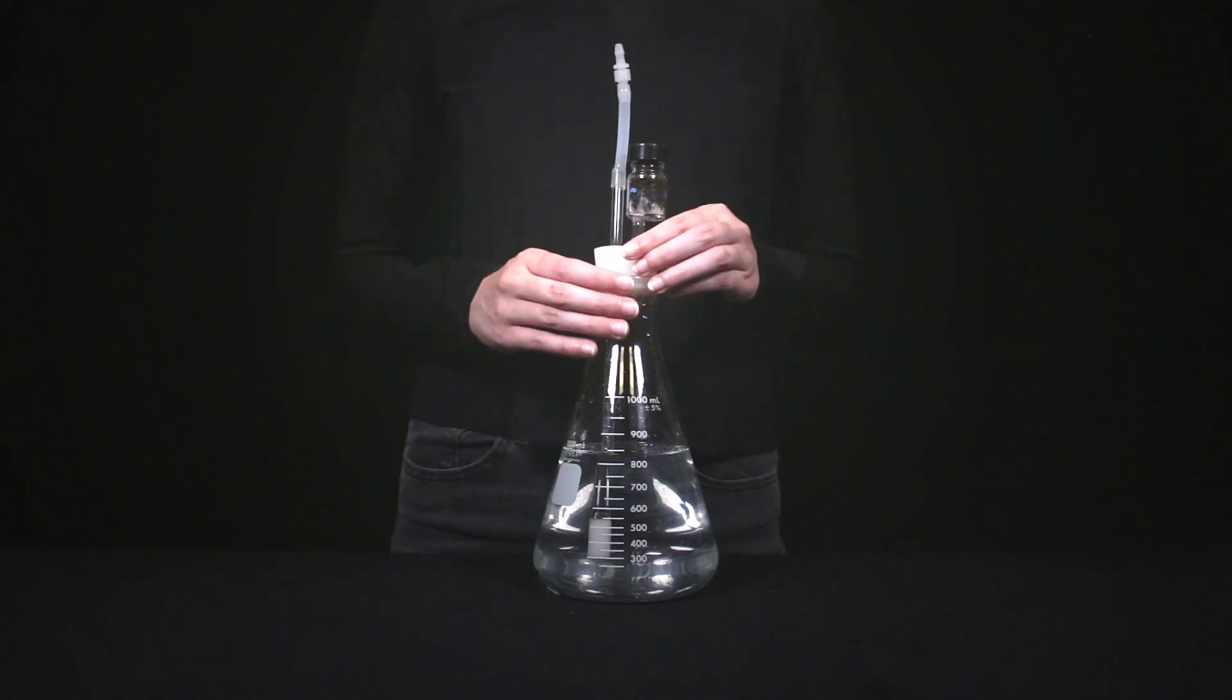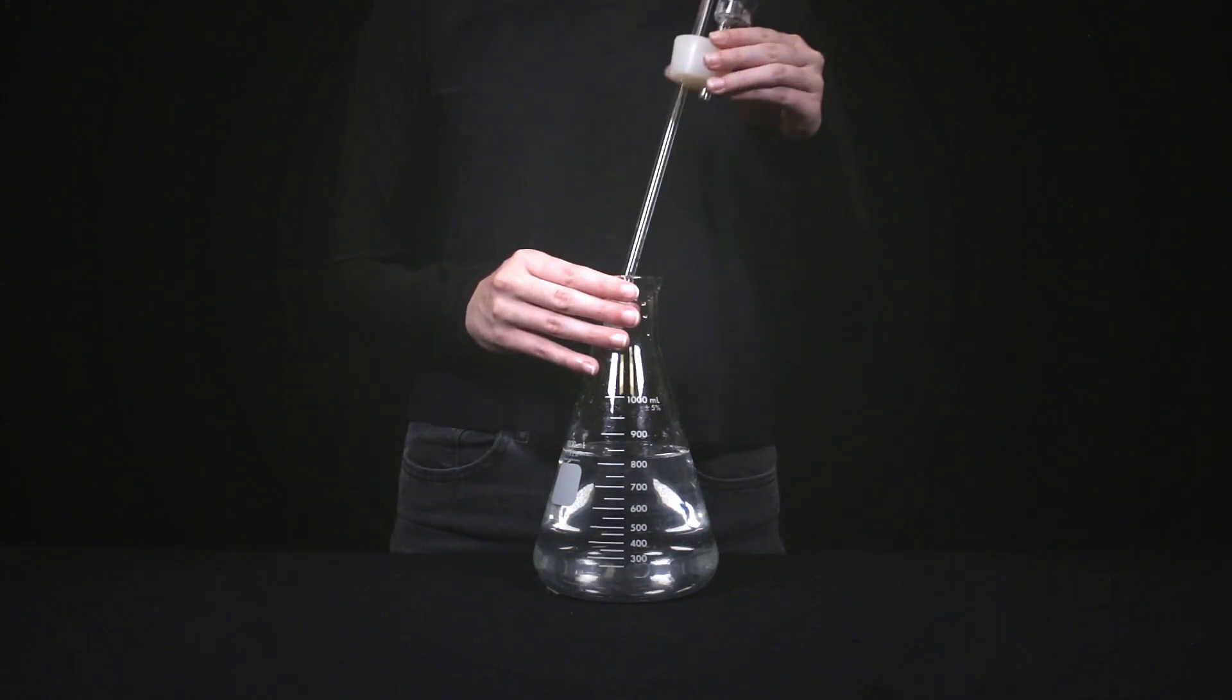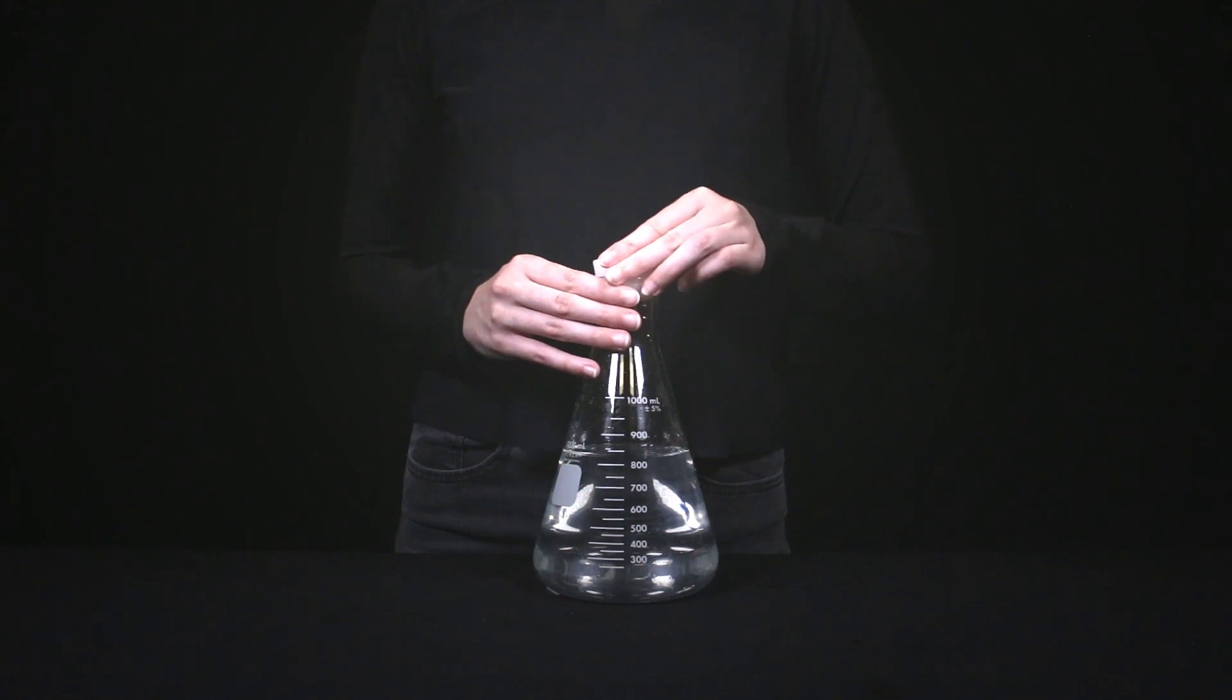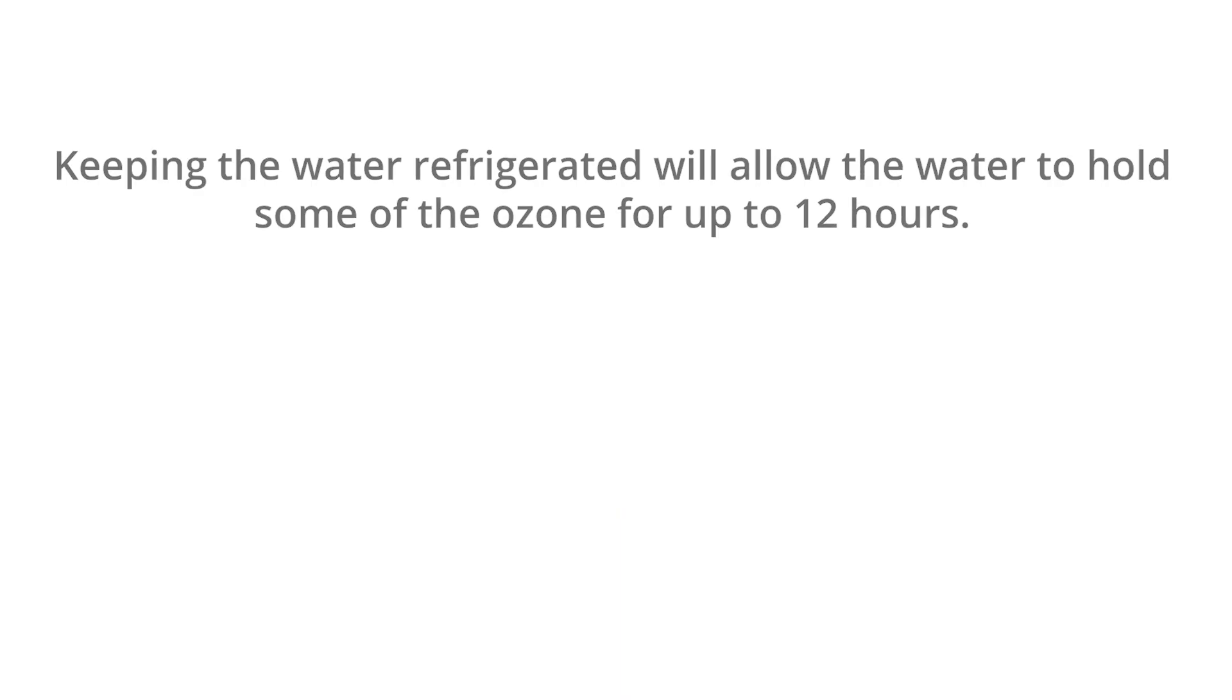For both bubblers, to store your water in the fridge, take out the silicone stopper with the glass straw and use the extra silicone stopper in its place. The ozone will start dissipating immediately, but keeping the water refrigerated will allow the water to hold some of the ozone for up to 12 hours.